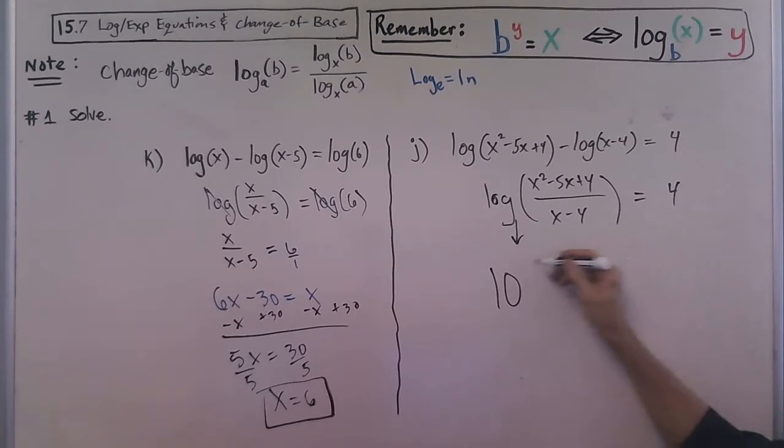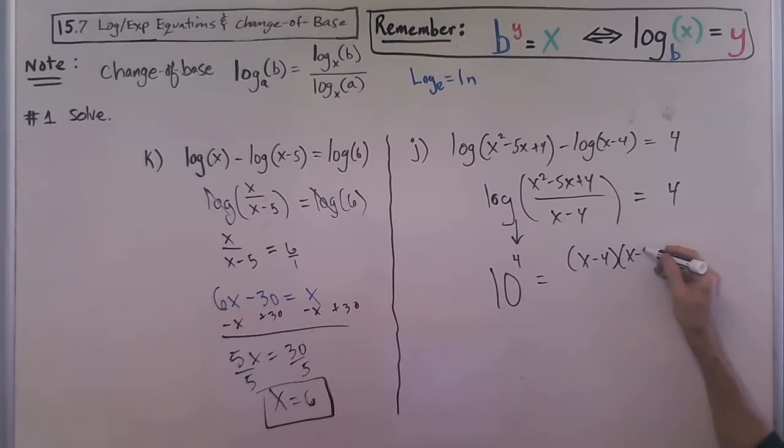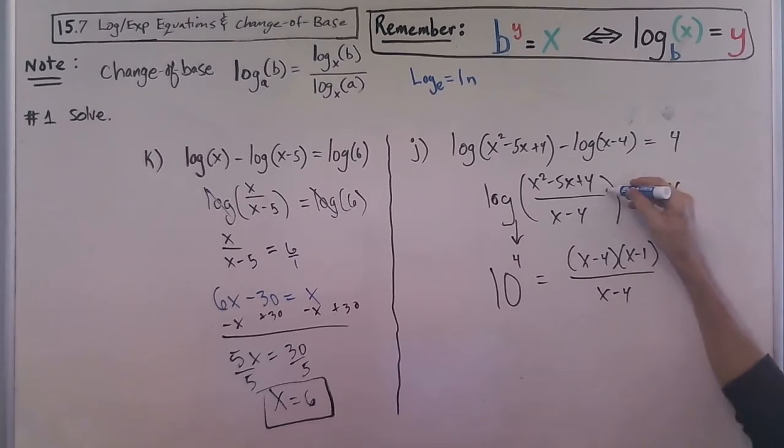So I got 10 to the 4th equals – I'm going to factor this. So it equals x minus 4 times x minus 1 over x minus 4. Just a little note here in case you missed it, I'm factoring that.